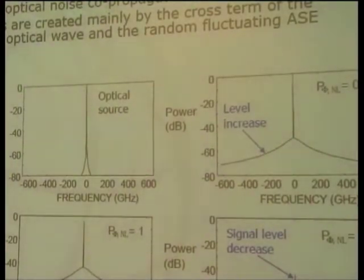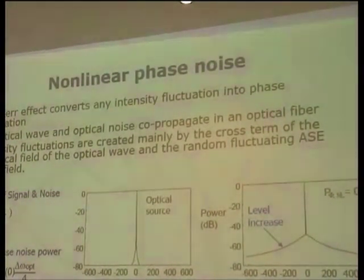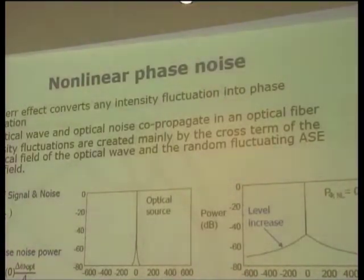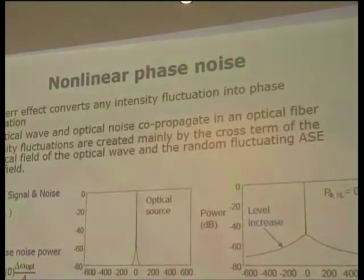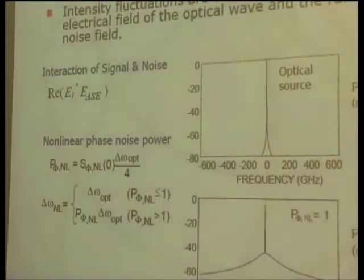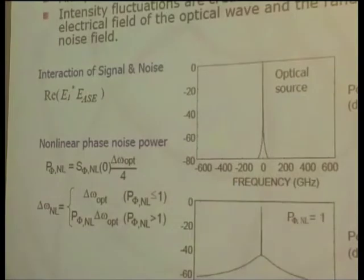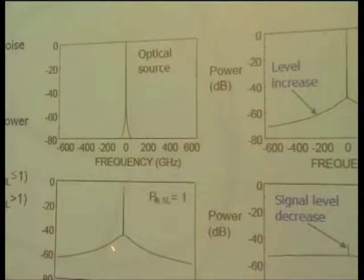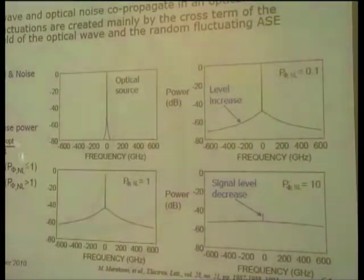Another type of nonlinear effect is nonlinear phase noise, which is the interaction between the signal field and the noise field. The result of this interaction produces phase modulation by the noise. As we increase power or length, you see a skirt of the noise spectrum — this is phase noise induced spectrum. The increased distance or power causes this noise level to rise, and finally the signal level decreases while the noise level becomes very large. This is so-called nonlinear phase noise.